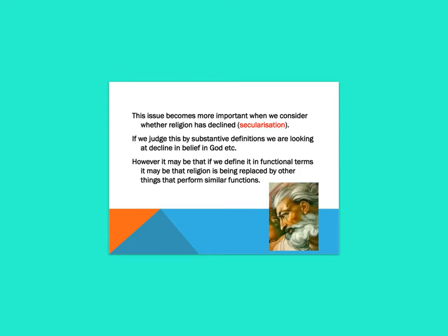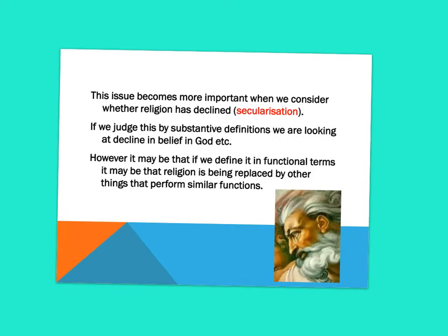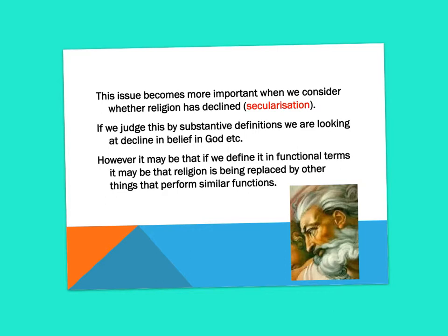All definitions emphasise certain aspects of religion and ignore others. Functional definitions tend to be too inclusive — it is too easy to qualify as religion — while substantive ones tend to be too exclusive. This issue becomes more important when we consider whether religion has declined. When we talk about secularisation — the separation of church and state — the church no longer has true influence on what the state does, which has happened in societies such as France. If we judge by substantive definitions we look at belief in God, but in functional terms religion may be replaced by other things that perform similar functions, such as celebrities.